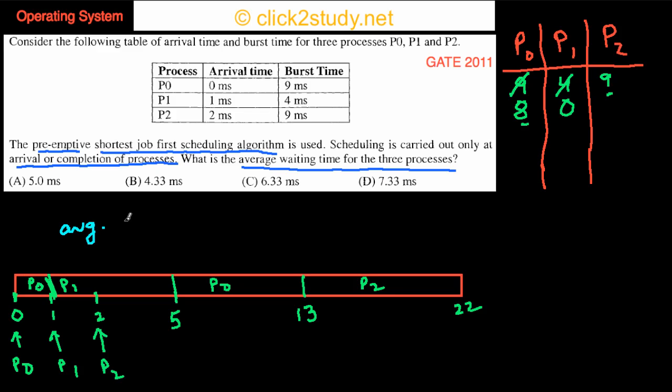If you want to find the average waiting time, what do you know about the average waiting time? The average waiting time is the waiting times. You take the average of all the waiting times. So P0, how much is P0 waiting?